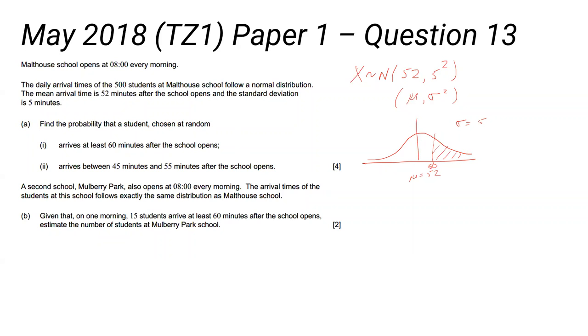So again, we know the value on the horizontal axis. We're looking for the probability. So this is an NCD question. It's the right way round. We're doing it the right way round.